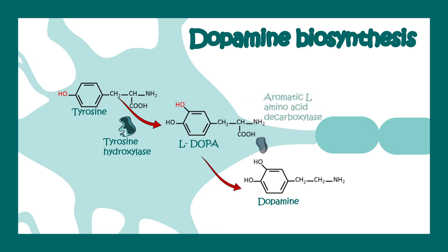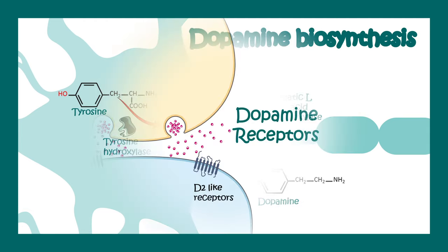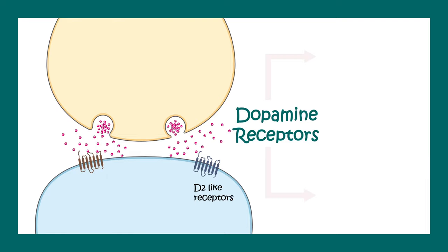L-DOPA gets further converted to dopamine by a decarboxylation reaction triggered by aromatic L-amino acid decarboxylase. Once dopamine is synthesized, it gets packaged into the synaptic vesicles.